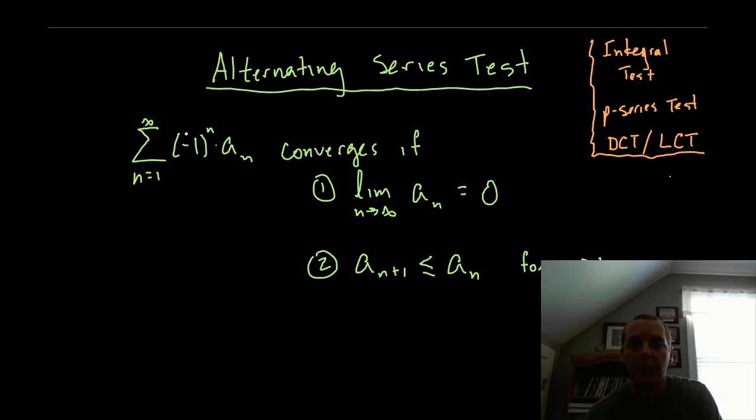The alternating series test is used when you have a series that alternates with positive and negative terms. Usually they are identified by having the expression negative 1 to the n. The reason that makes the signs differ is when n is an odd number like the first term you get negative 1 to the first which stays negative 1, but any time n is even like 2, 4, 6 or 8, negative 1 to an even number turns out to be positive. So whenever you see a series that flip-flops sign it is a good chance that you could use the alternating series test to determine its convergence.